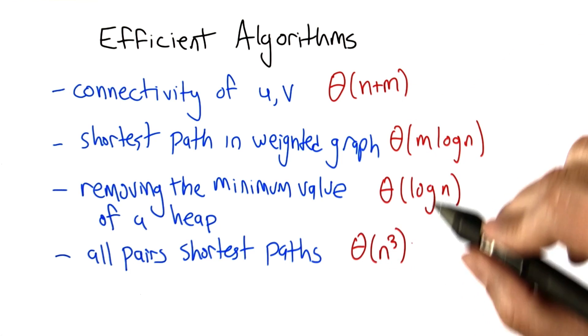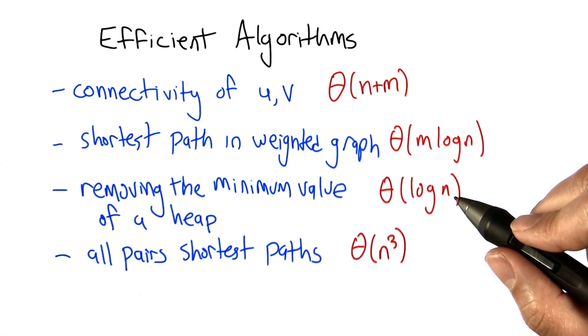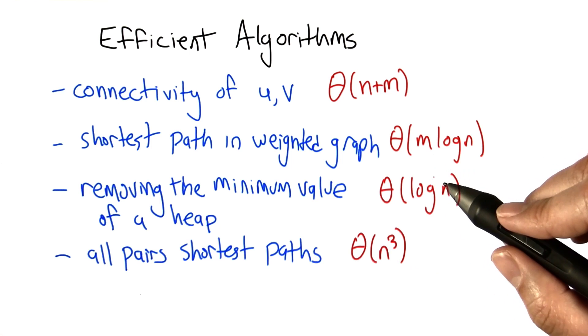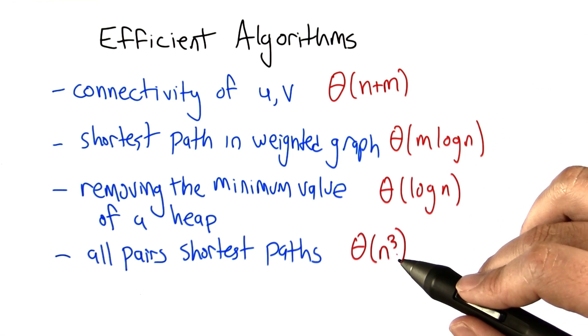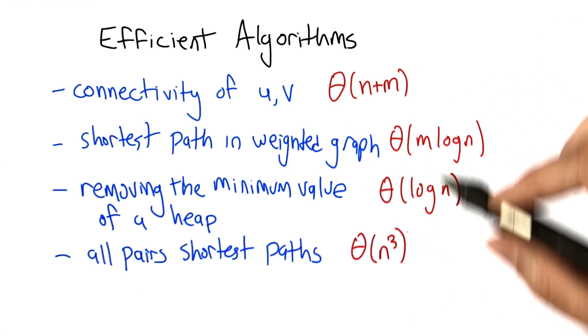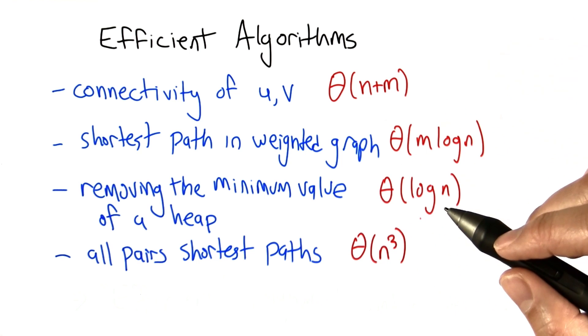You have a sense that these are considered to be pretty good algorithms. In fact, in some cases, very good algorithms. You see that they're all polynomially bounded. There's some polynomial in n and m that actually is larger asymptotically than all of these.